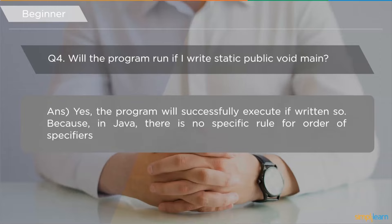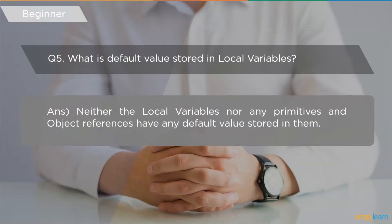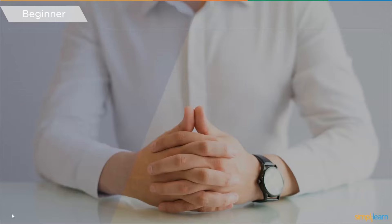The next question is: what is the default value stored in local variables? In C, an uninitialized variable stores a garbage value. Similarly in Java, neither local variables, global variables, primitives, nor object references have any kind of default values stored in them.